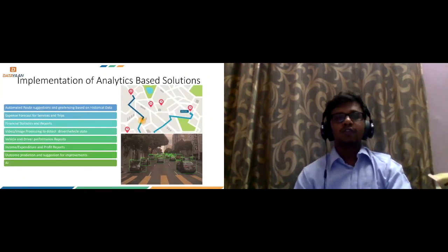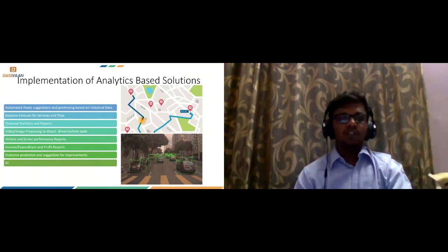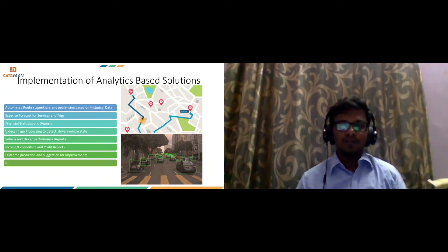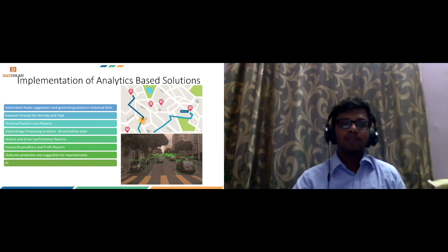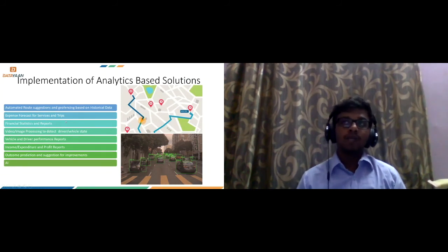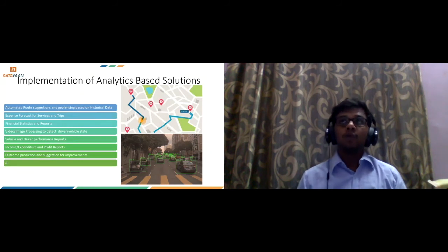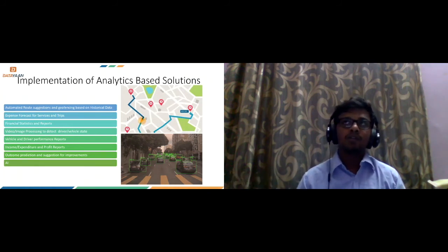And next, we implement the analytics based solutions. Since we are covering the transportation logistics, the data can be used to automate route suggestions. This specific organization is carrying large parts like wind turbines that need to be transported. The route is actually pre-planned, so we can use historic data to actually give them good suggestions based on their loading points and unloading points. Then expense forecast and services. There could be wear and tear on the parts, especially on the tires. We can proactively tell them that this specific vehicle has run for so many kilometers and so many hours. There is going to be considerable wear and tear, and you will have to change this so that you don't suffer any breakdowns during the next trip.